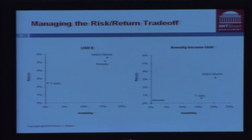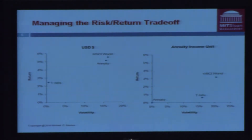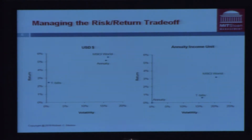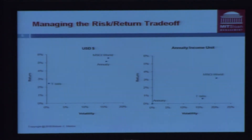If you create a risk-return frontier — expected return versus volatility — I plotted three assets on the left for the usual way. You can see annuity units are almost as risky as common stocks. That's what MSCI is. And T-bills are not at low risk. Now look at it in the proper units. Annuities are risk-free by construction. T-bills are very risky. And stocks are qualitatively in the same place they were before. The point being: the risk-return frontier is wrong, and that's the bad news.